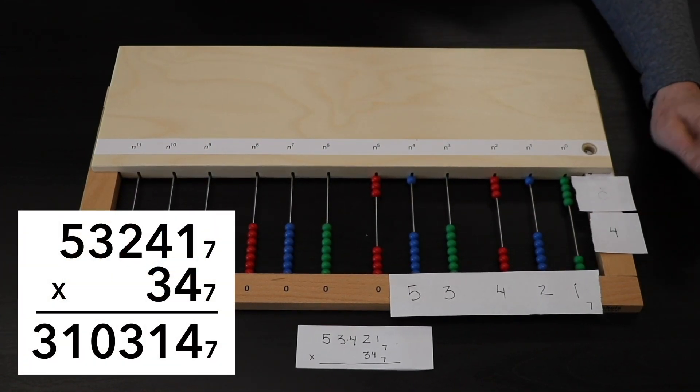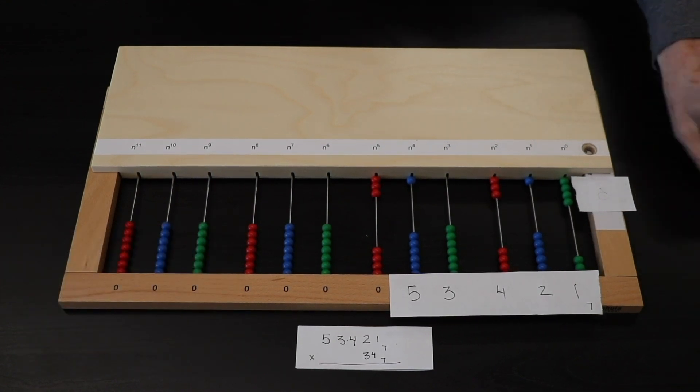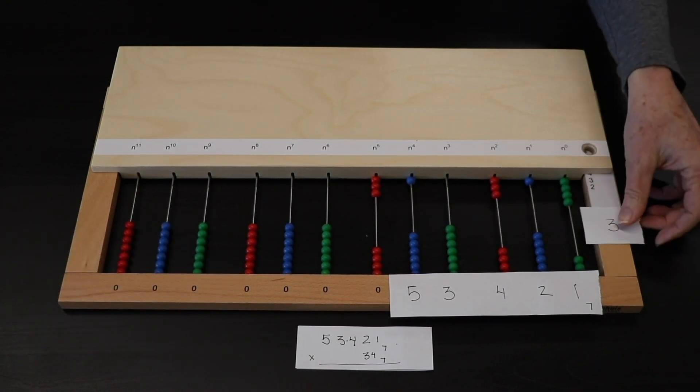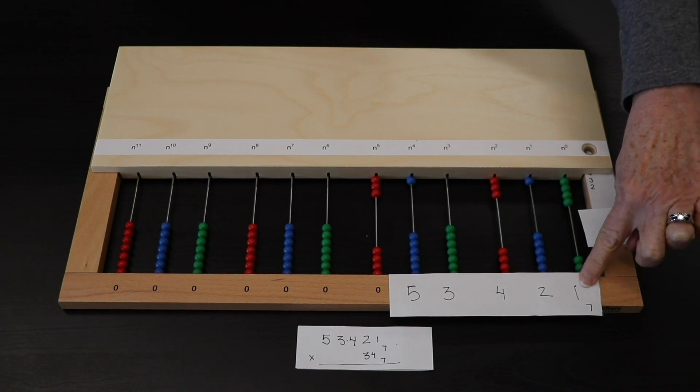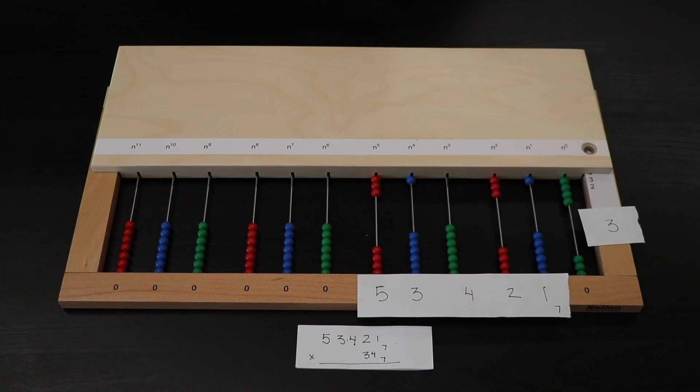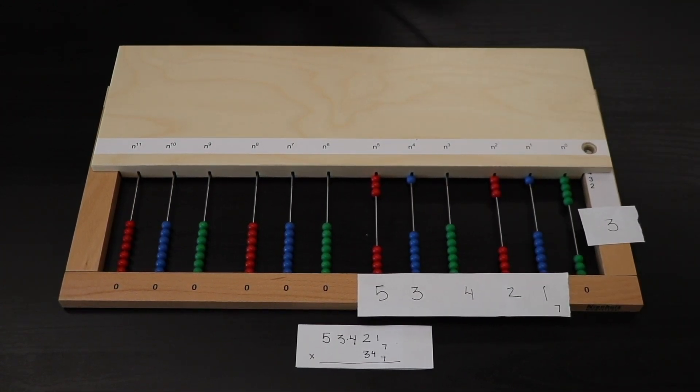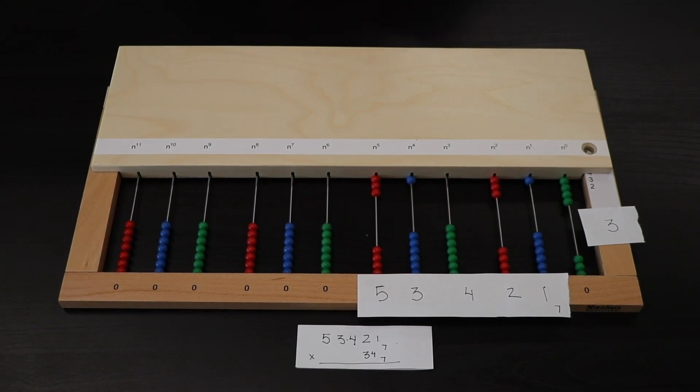But that's just multiplying it by the first term. Now, we can multiply it by the second term. And just like on our gold bead frame, all we have to do is move over our place values and we have our zero. If you want your children to write the first partial product and then multiply by the second digit to get the second partial product, feel free to do that. These are all the same steps that we use on the gold bead frame.